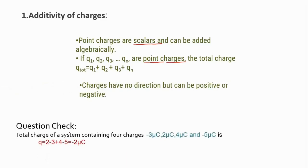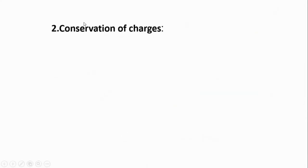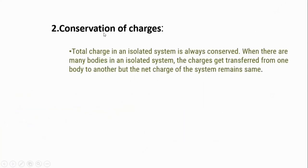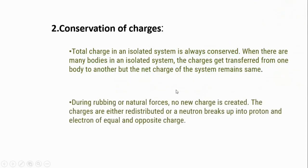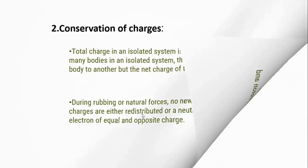Here is a question check: the total charge on a system containing four charges — minus 3 microcoulombs, 2 microcoulombs, 4 microcoulombs, and minus 5 microcoulombs. The total charge is the algebraic sum, which gives minus 2 microcoulombs. That is, the net charge on the body is negative. The next basic property is conservation of charges. The total charge in an isolated system is always conserved, meaning constant. We cannot add or remove charges — only in an isolated system do charges get transferred from one body to another, but the net charge of the system remains the same. During rubbing, no new charges are created; there is only a redistribution of charges.